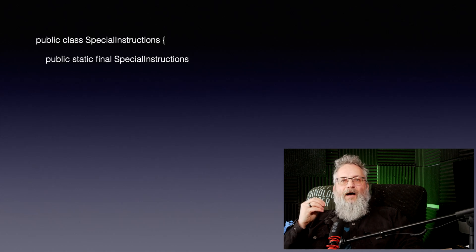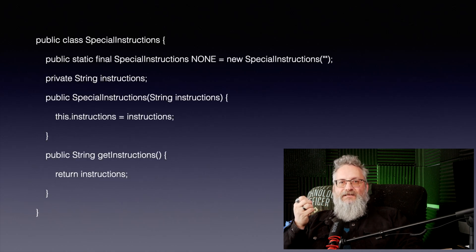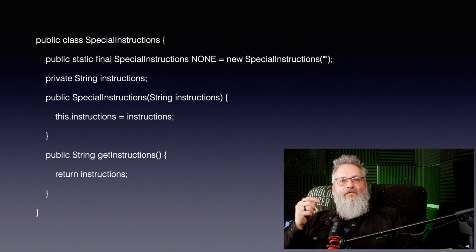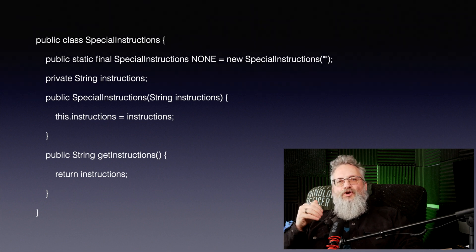Bonus tip: the null object pattern. If the field is optional but still frequently accessed, consider using the null object pattern to avoid null checks. This makes your code safer and easier to maintain. If every field in your code is a sign of responsibility, what story is your class trying to tell — and does that story still make sense?